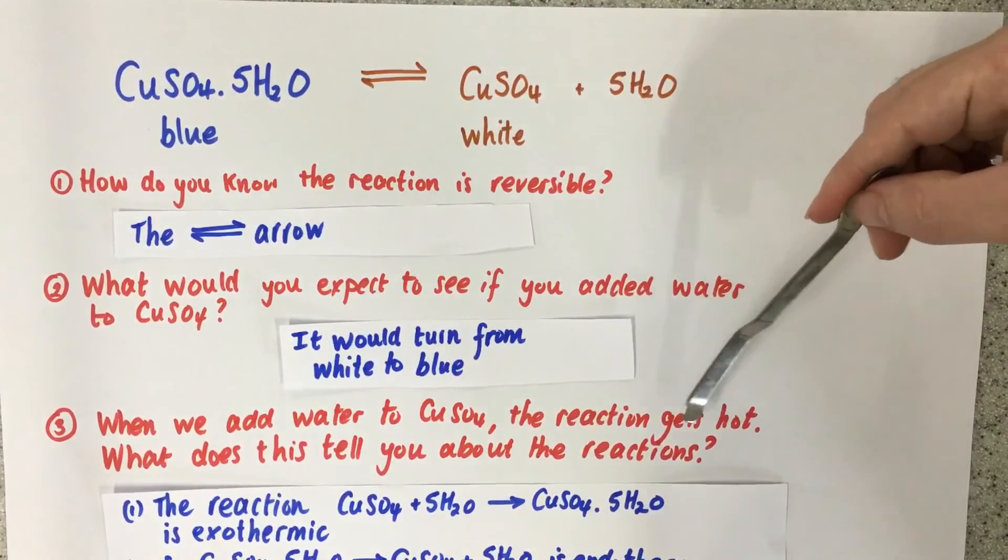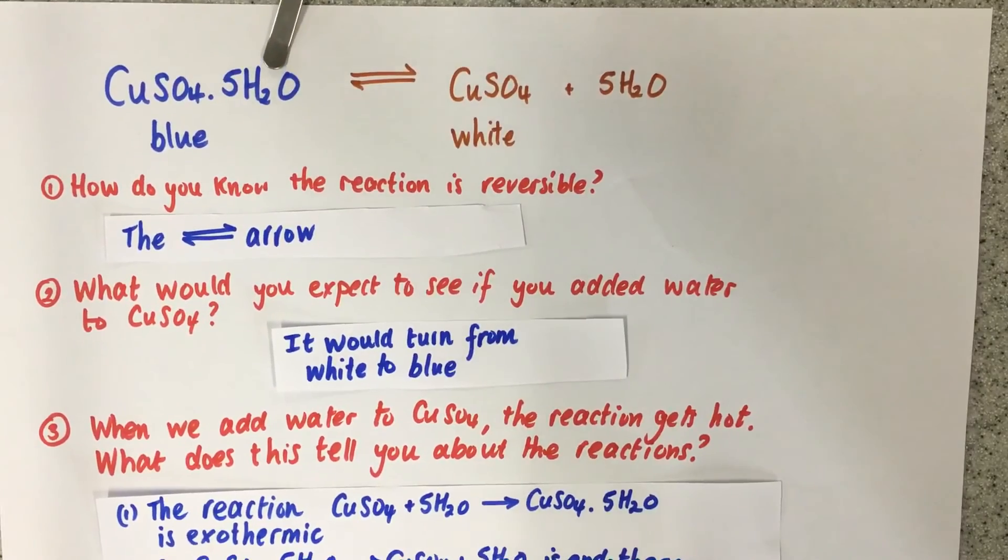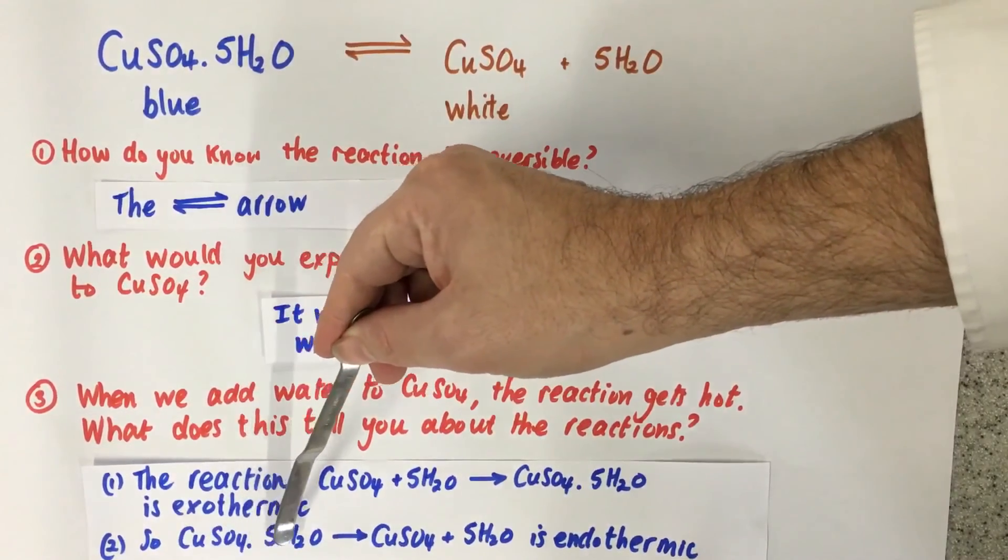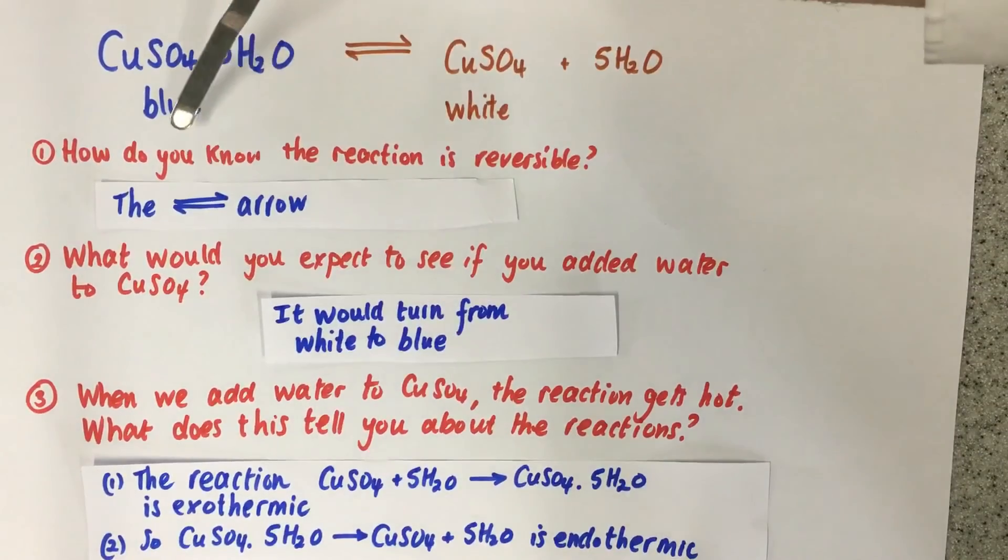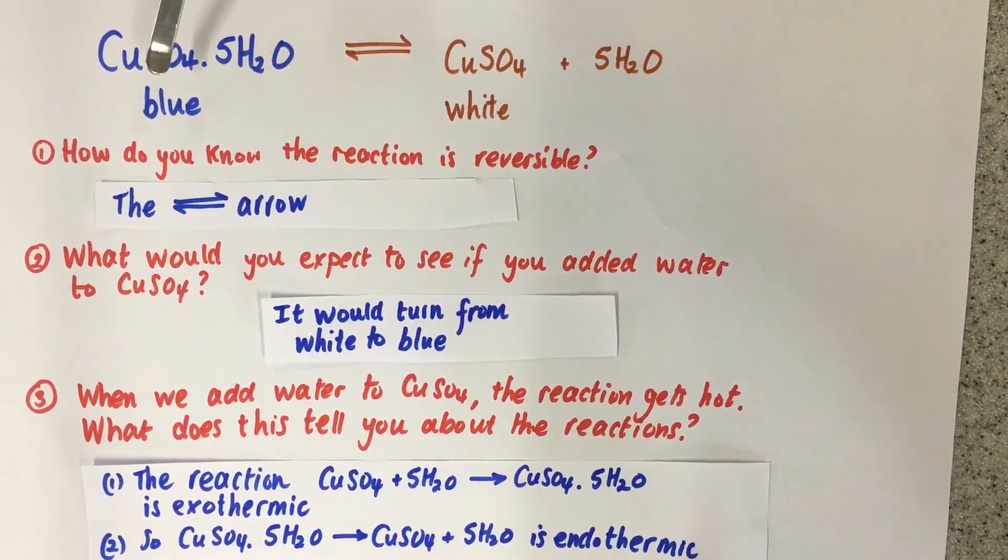And because the reaction that goes that way is exothermic, we can say the copper sulfate plus 5H2O, the blue going to white, must be endothermic. Because the reaction that way is exothermic, the reaction going in the other direction is endothermic.